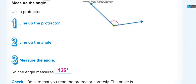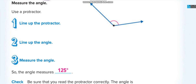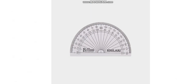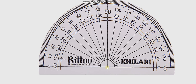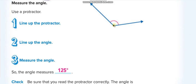For this one, you put the middle point of the protractor on the vertex and align zero with the baseline. Then you check the angle. If it looks like it should be more than 90 degrees, it must be — and here it is 125 degrees.